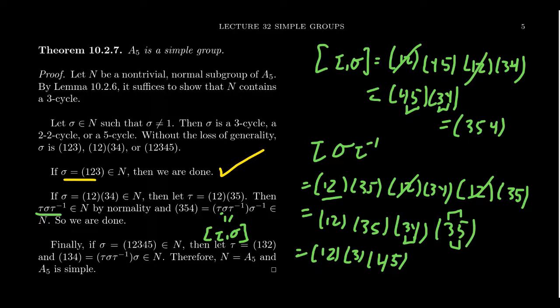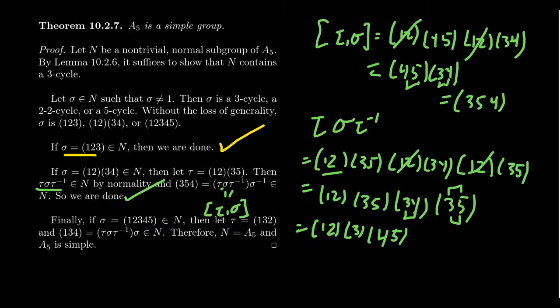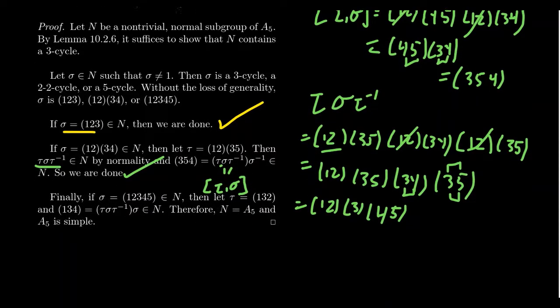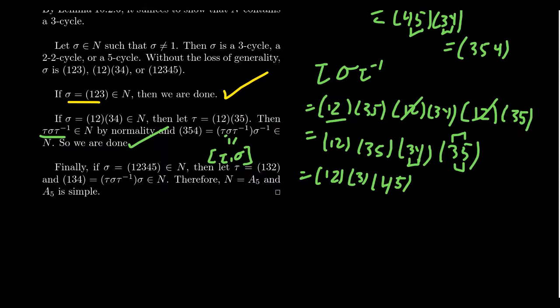This gives a 3-cycle, so the second case yields a 3-cycle in N, meaning that normal subgroup is all of A₅. The last possibility is a 5-cycle, say sigma = (12345). Consider the commutator of tau = (132) and sigma. Working through the product tau·sigma·tau⁻¹·sigma⁻¹, tracking where each element goes, the result is the 3-cycle (134).